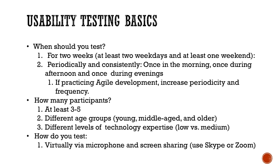If you're practicing agile, increase the periodicity and frequency. Agile basically says you want to do things quickly, in small modules with very specific deliverables and objectives in mind. So if you're practicing agile, give users smaller activities and test in small chunks of time. What do they do if they have a minute to spare? If they have 30 seconds to spare, can you actually order something in 30 seconds or one and a half minutes? These are things people do when they're in a bit of a hurry and in between things.